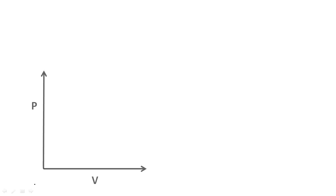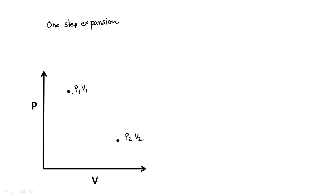Let us go back to the one-step expansion from V1 to V2. The system is initially at the first state point, and when the weights are removed, it expands and equilibrates to the new state. When we put the weights back, the system returns to the original state with volume V1. So is the process reversible? It is irreversible, because in the overall process the surroundings have gained heat. On the PV diagram, the heat taken from the surroundings for the expansion corresponds to a certain area.